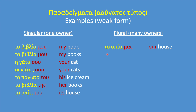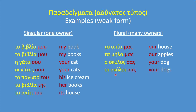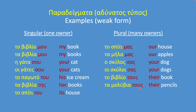In the plural: το σπίτι μας — our house; τα μήλα μας — our apples; ο σκύλος σας — your dog; οι σκύλοι σας — your dogs; το βιβλίο τους — their book; τα μολύβια τους — their pencils; τα σπίτια τους — their houses.